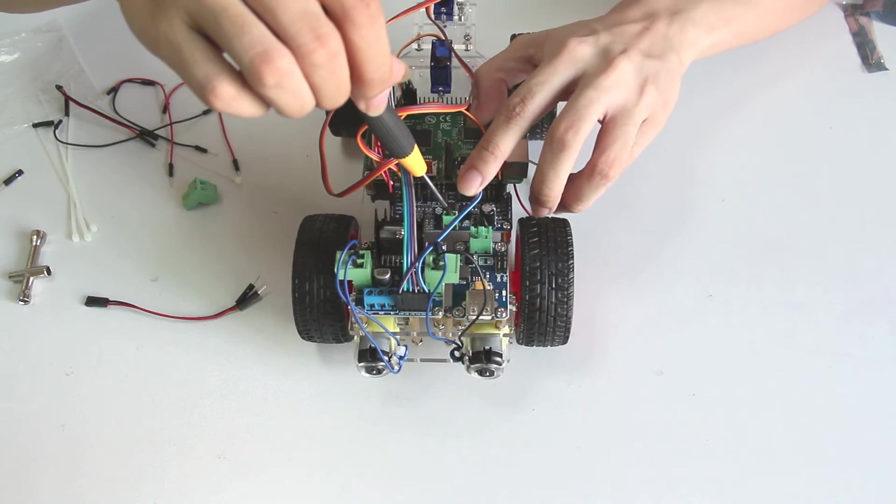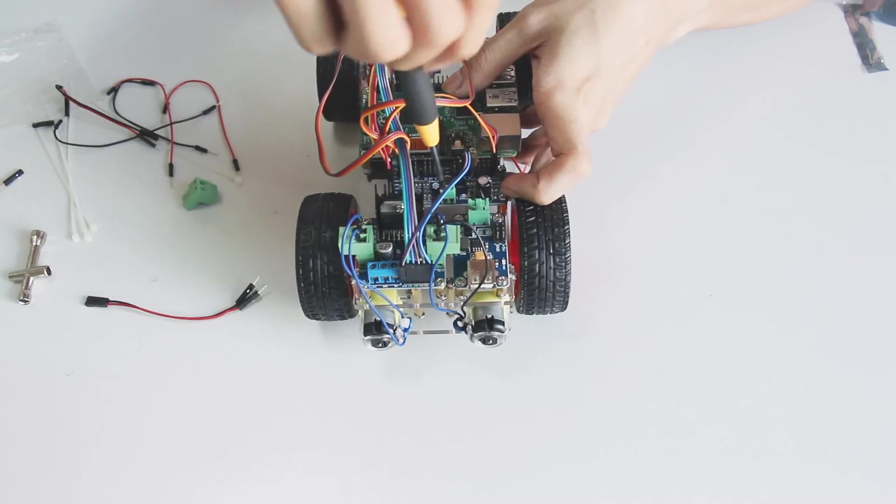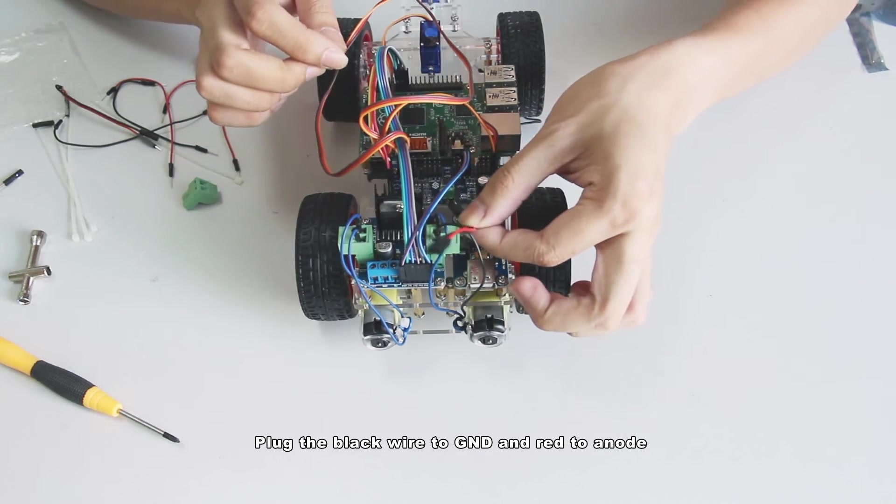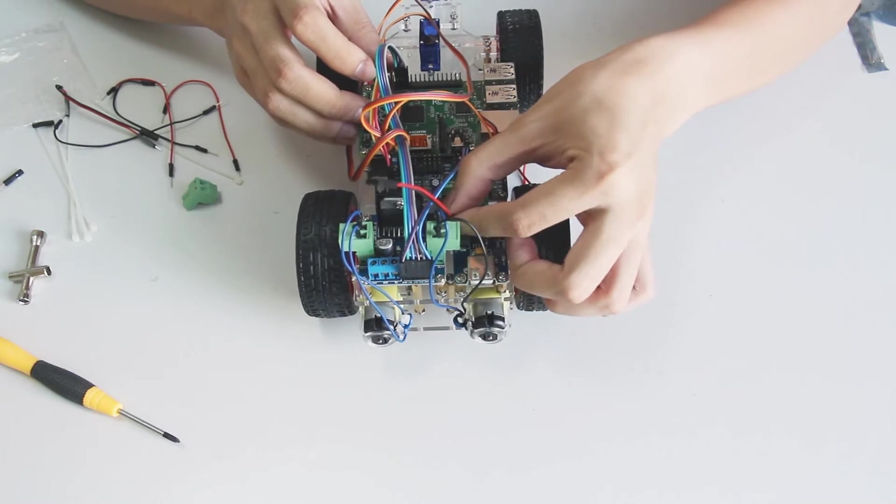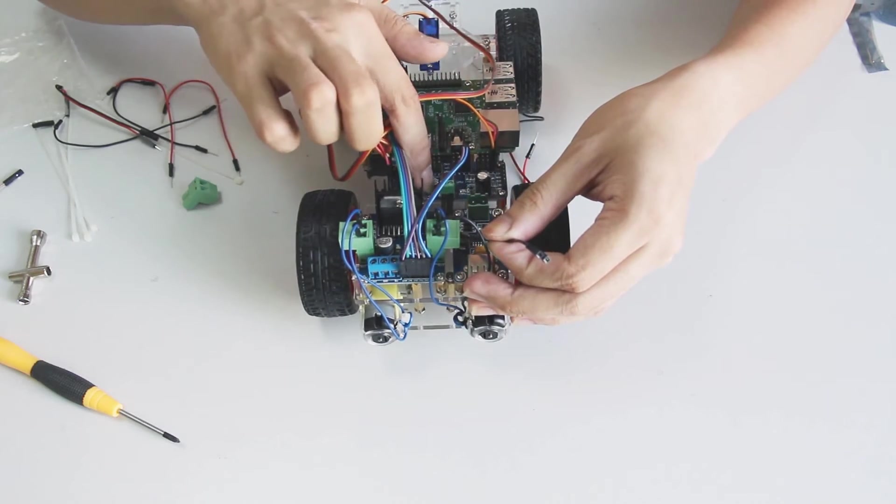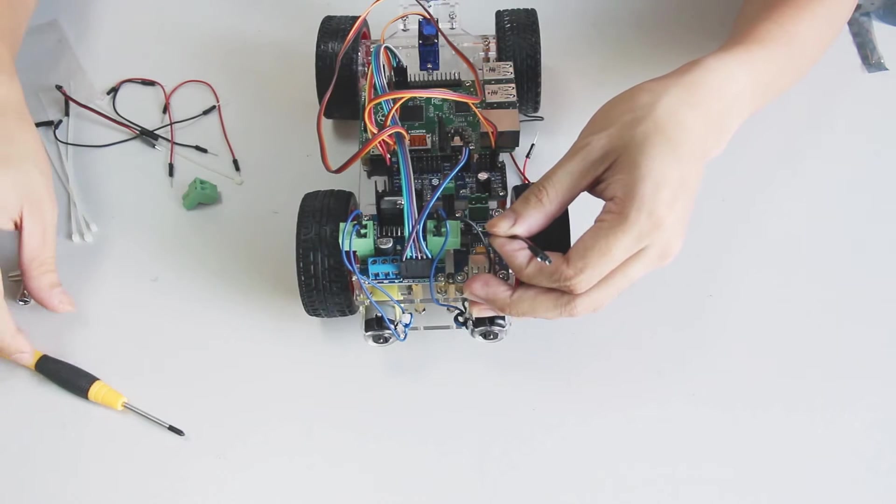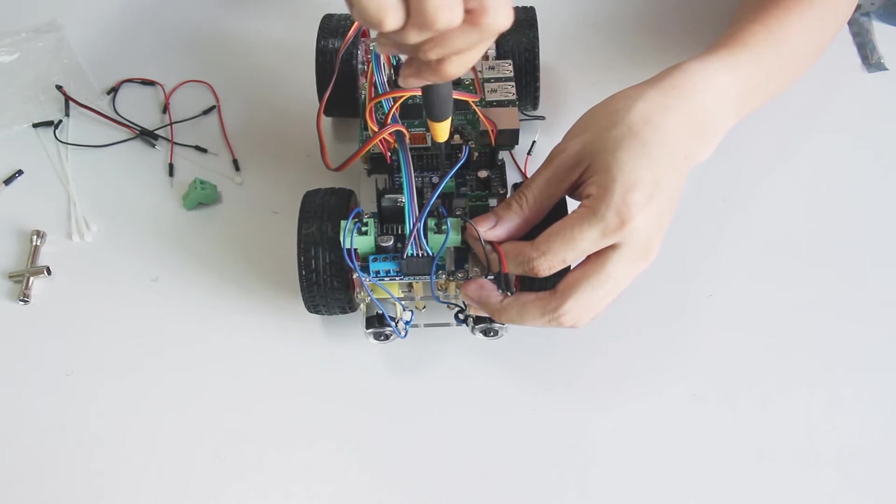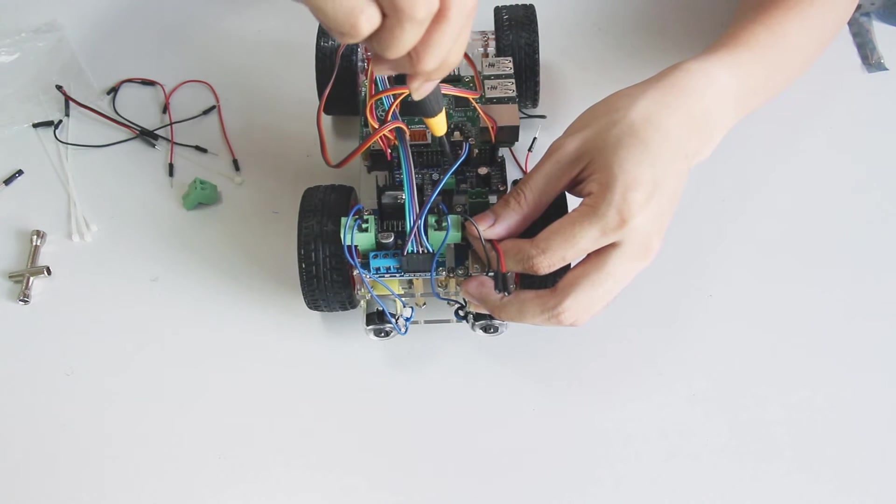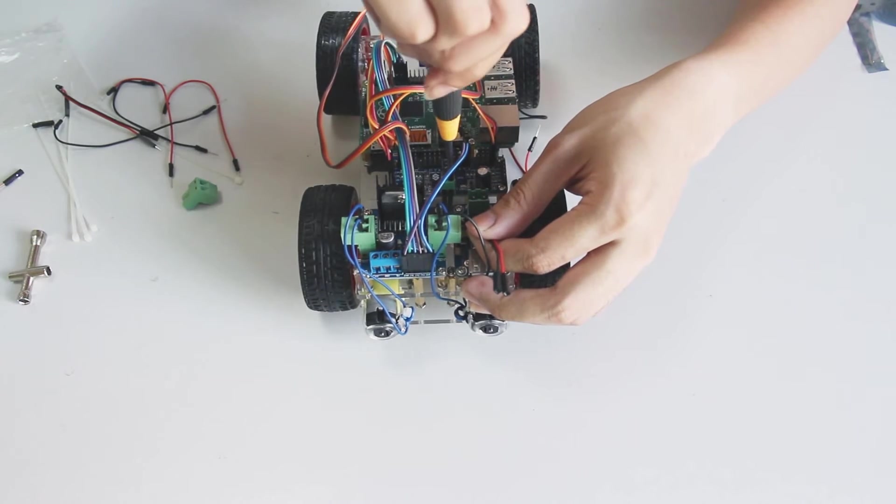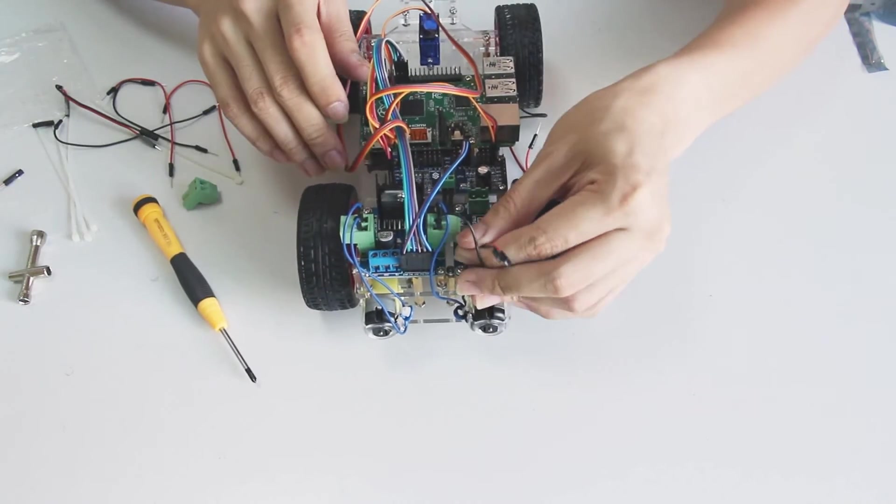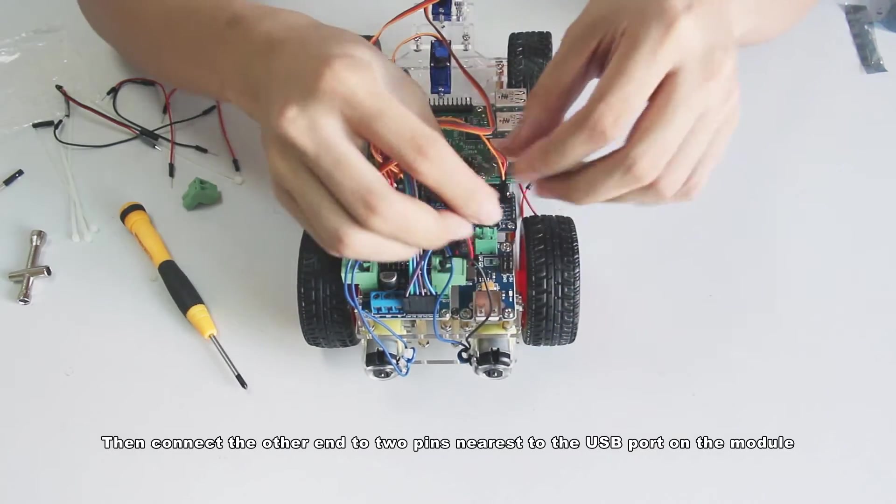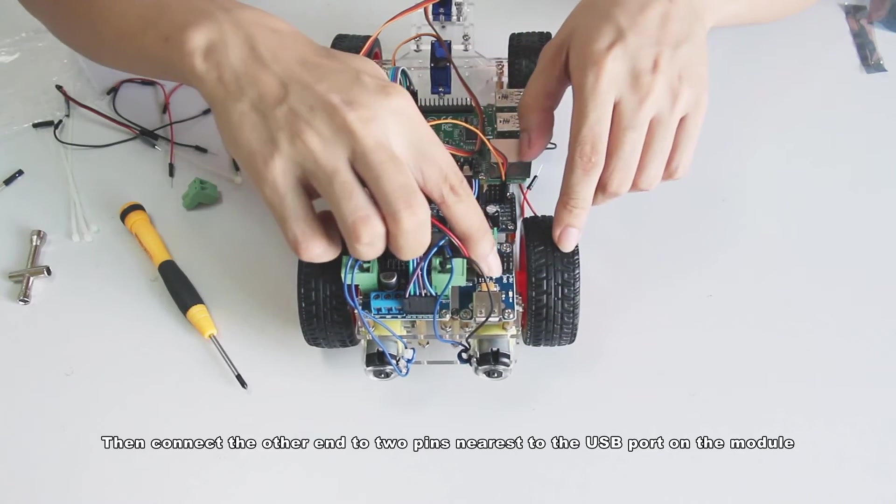First loosen the screws. Plug the black wire to GND and red to anode. Tighten the screws.